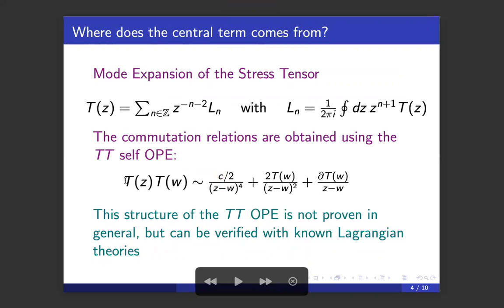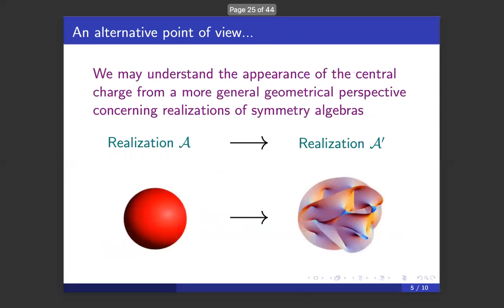The usual procedure is to consider the stress tensor of the theory, consider a mode expansion, and take the modes of the stress tensor to be the generators of the quantum algebra. We can compute the commutation relations by computing the OPE of the stress tensor, which is shown there and has this anomalous term that contains a central charge. Notably, this structure of the OPE is not something that is proven in general. There are several arguments that it should take that form, and in particular it can be verified for several known Lagrangian theories, but this is not an absolute statement.